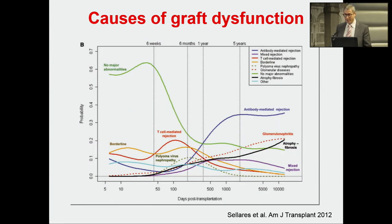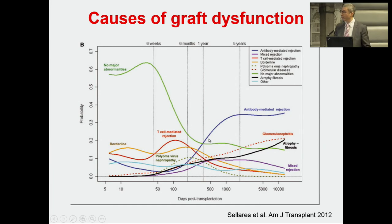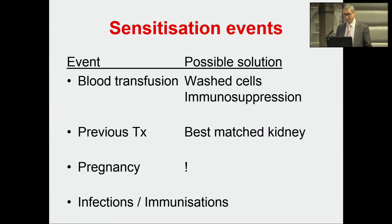We're all aware of the causes of graft dysfunction. From work by Solaris et al., you can see that antibody-mediated rejection — the dark blue line — starts off with a bit of a peak, goes down to a lull around about 100 days, but then increases. Once you've reached just over one year post-transplant, the most common reason for graft dysfunction is biopsy-confirmed antibody-mediated rejection.